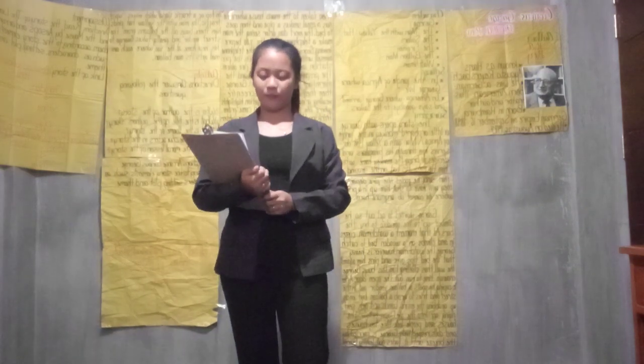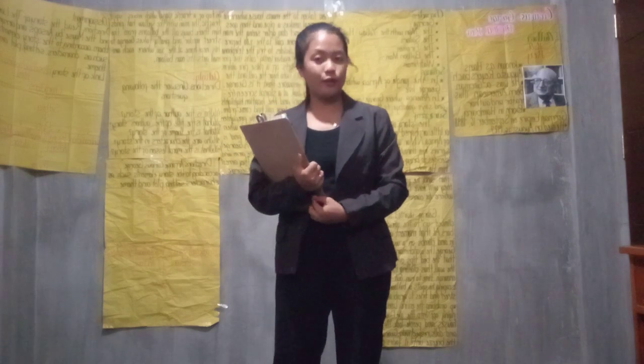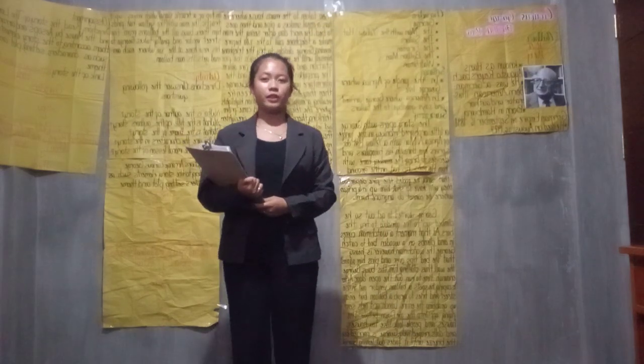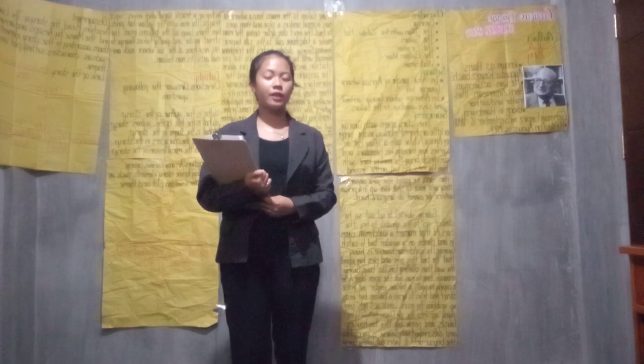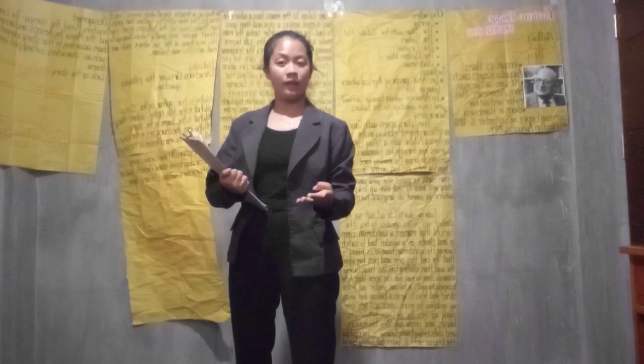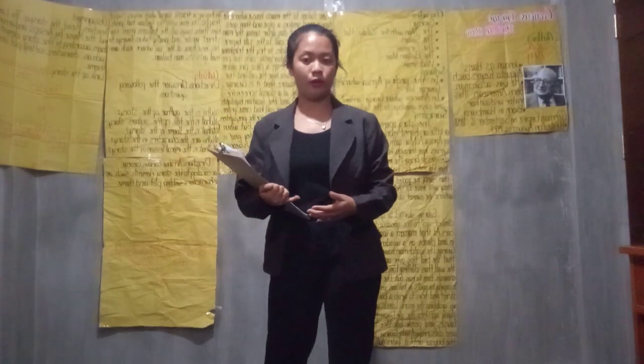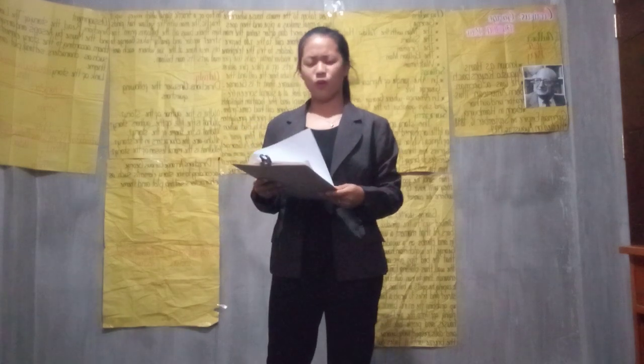Before we proceed to our activity, let's have a short review of the story. Who are the characters of Curious George? The characters are George, the man with the yellow hat, the sailors, the firemen, the watchmen, and the balloon vendor. Who is the author of the story? The author is Hans Augusto Reyersbach.